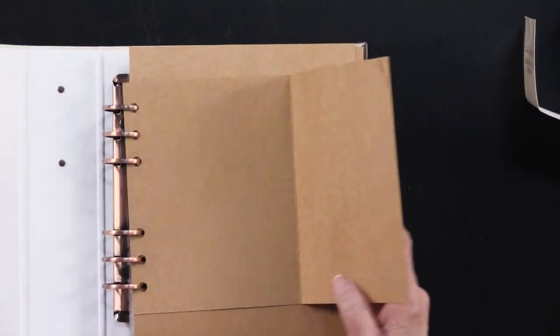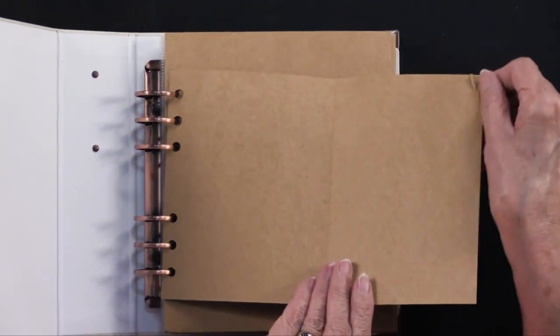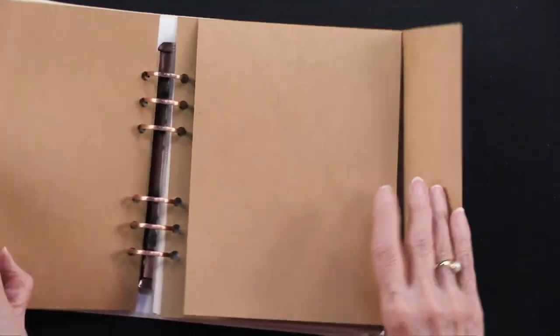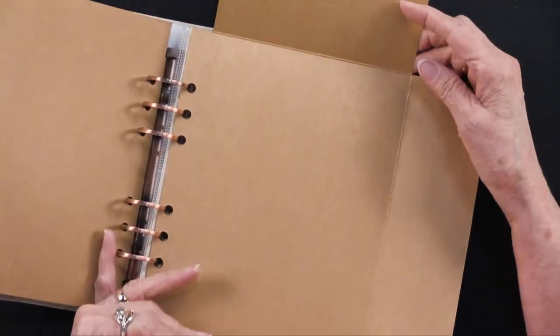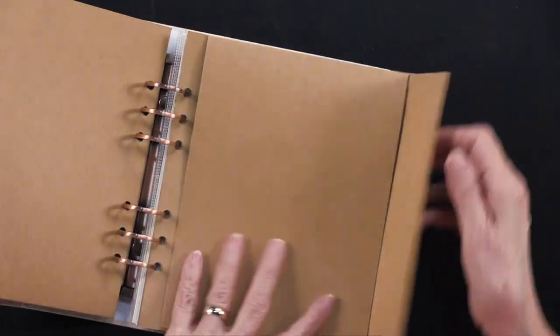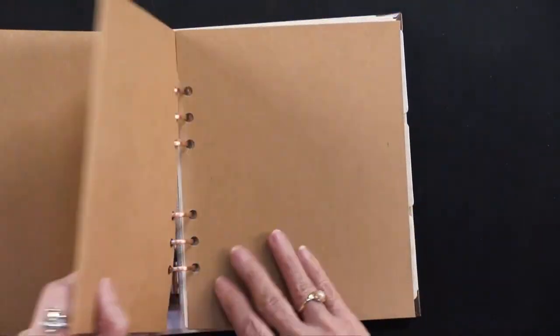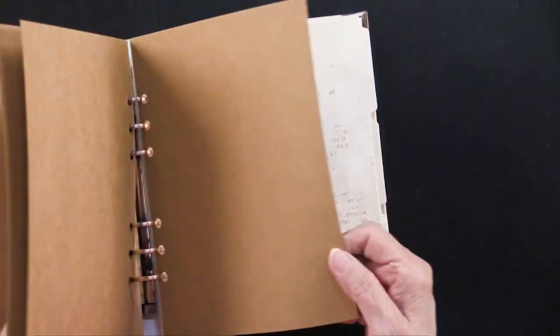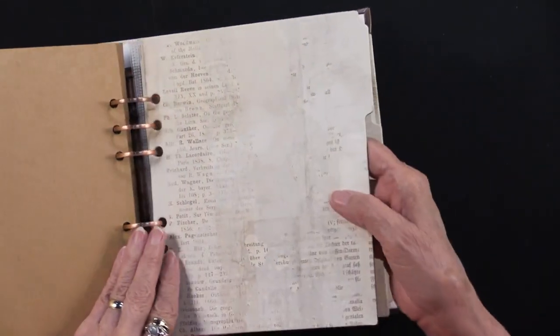So this opens up right there. You've got a pocket and you have this. And this is going to open twice, just like that. And then it has a closure. Then the next one is just pages. So you've got three of these. Then you have these tab sections.